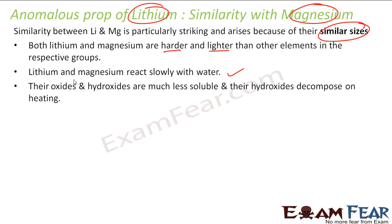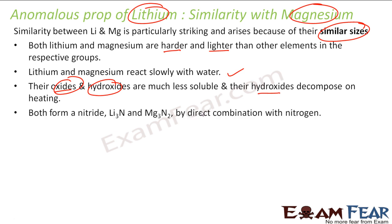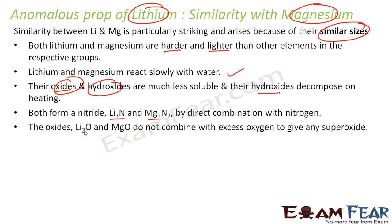Their oxides and hydroxides are less soluble, and their hydroxides decompose on heating. They both form nitrides when they directly react with nitrogen. Even with excess oxygen, both lithium and magnesium always form the oxide — they do not form superoxides, which other elements in their group form.